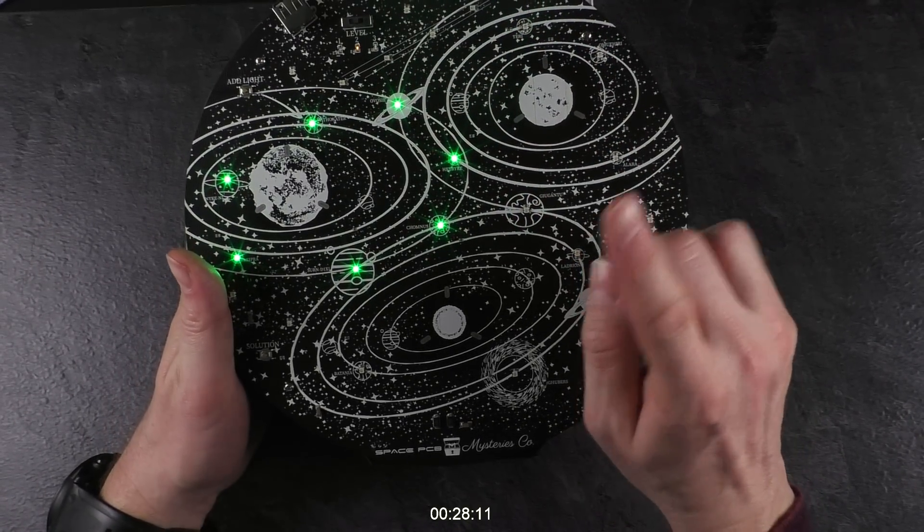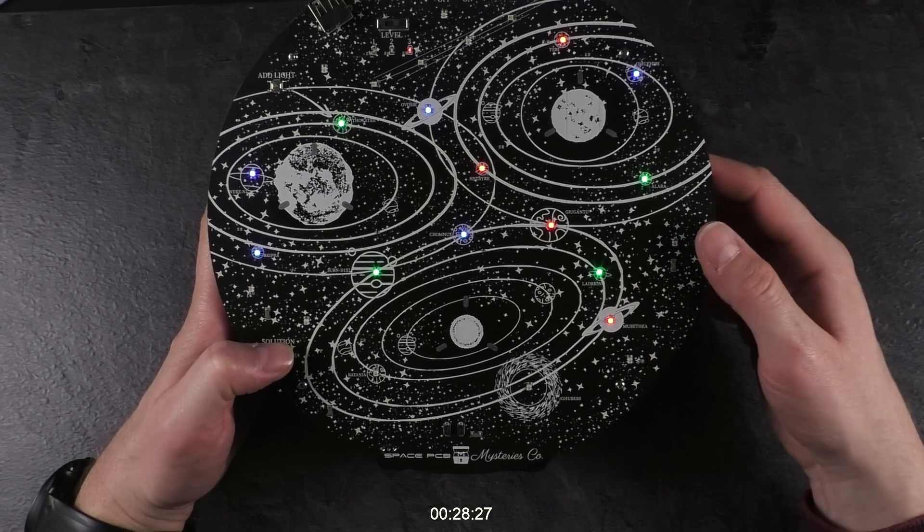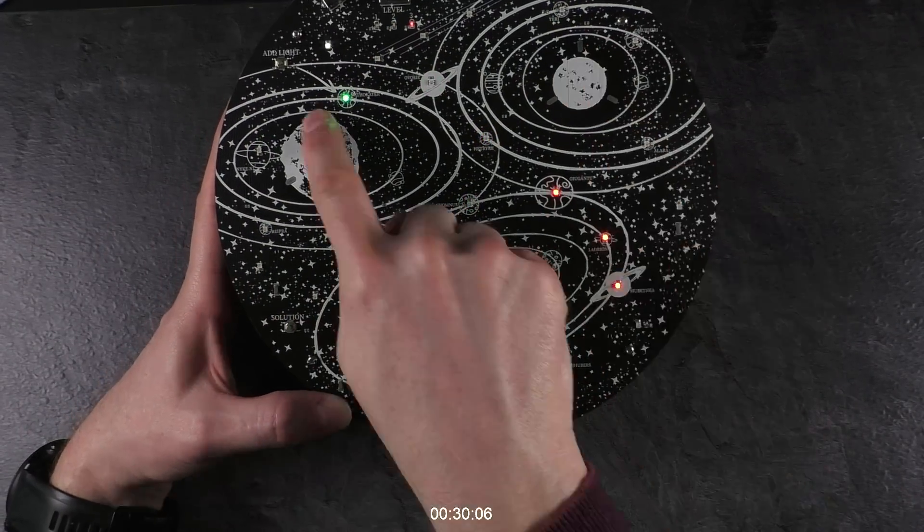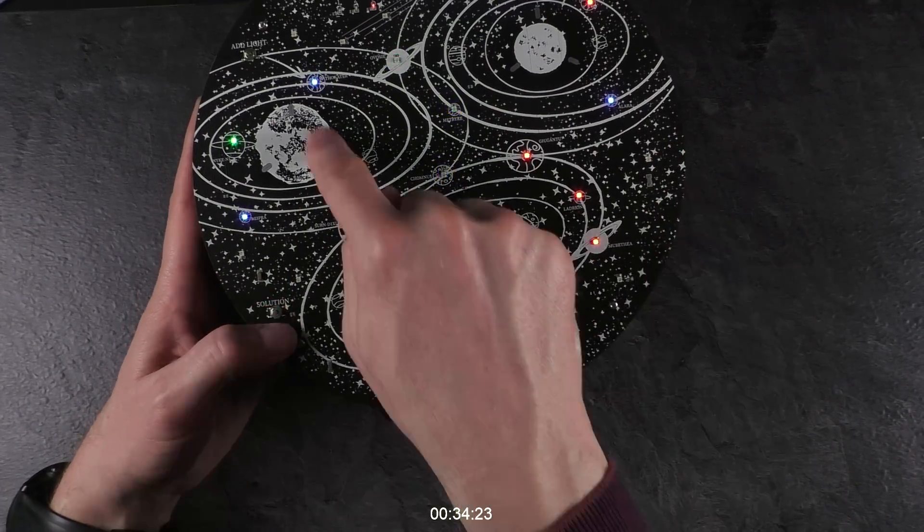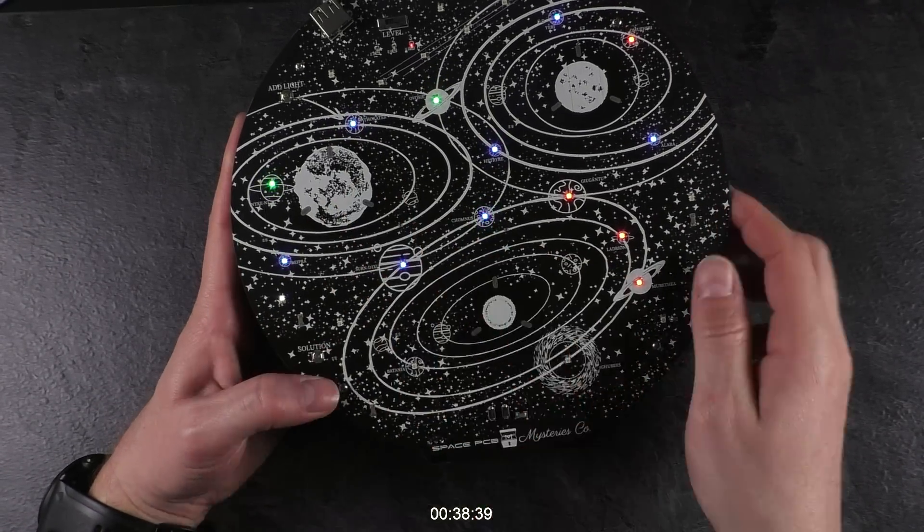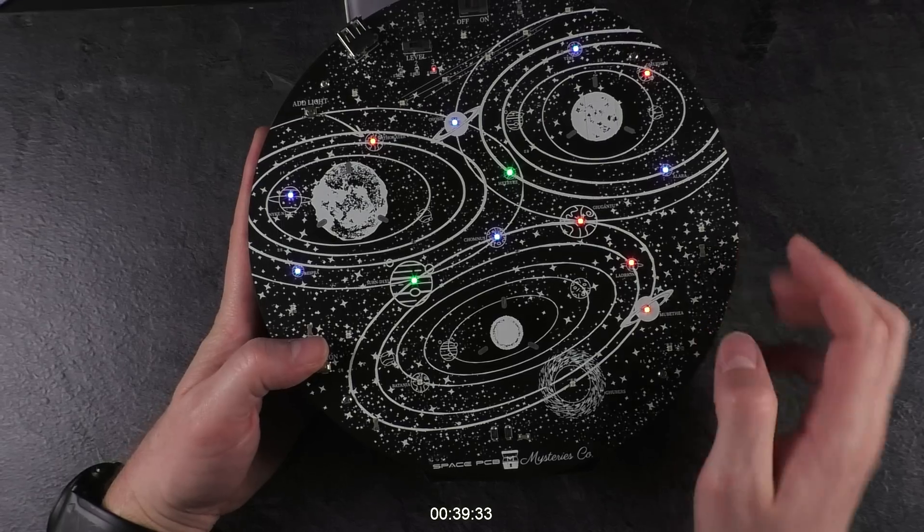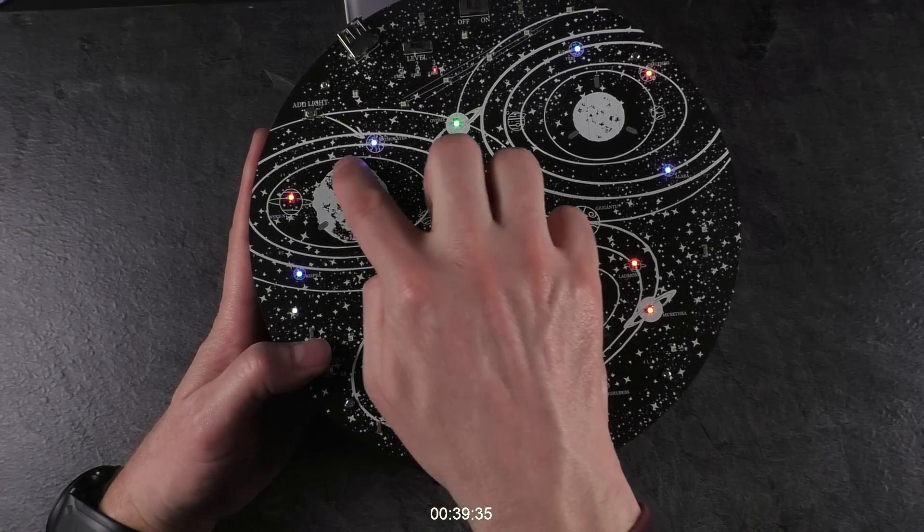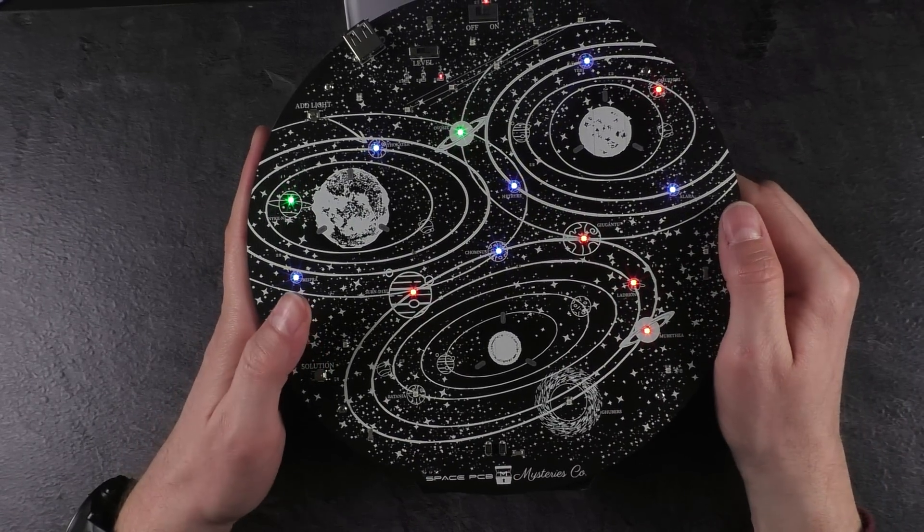And now comes level three. And this is the level three solution. So most of the lights actually lighting up. Here we go. The red one is here. And now level three is solved as soon as I move it down here. Boom.